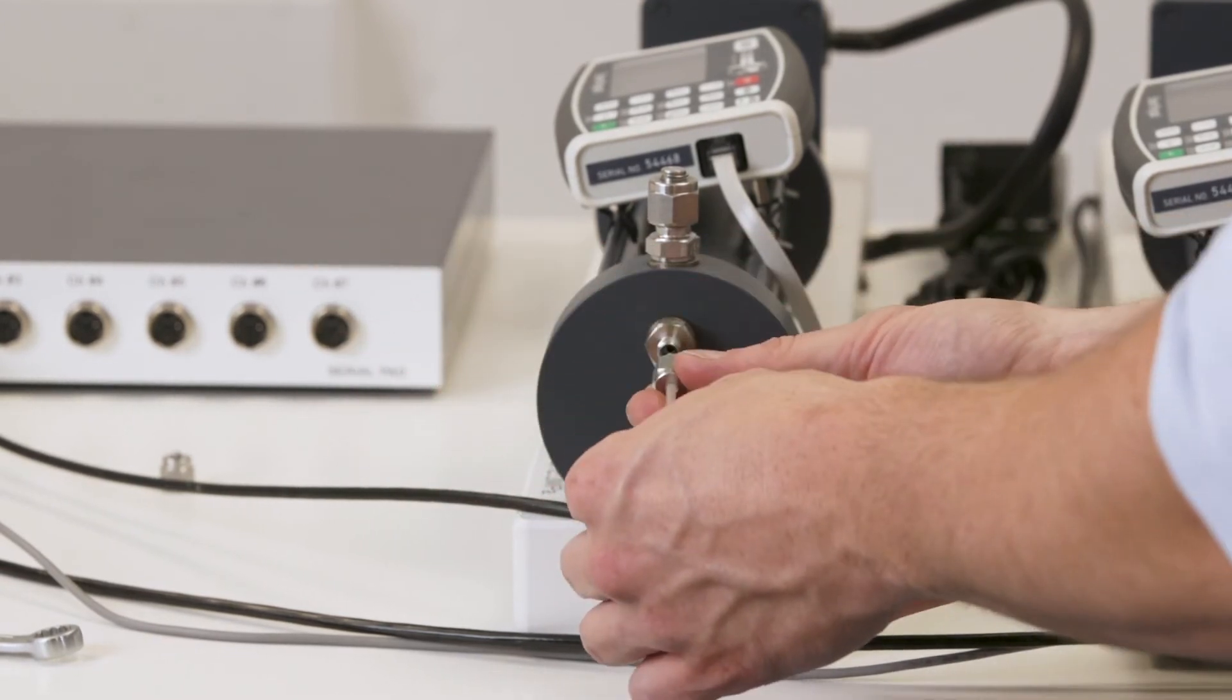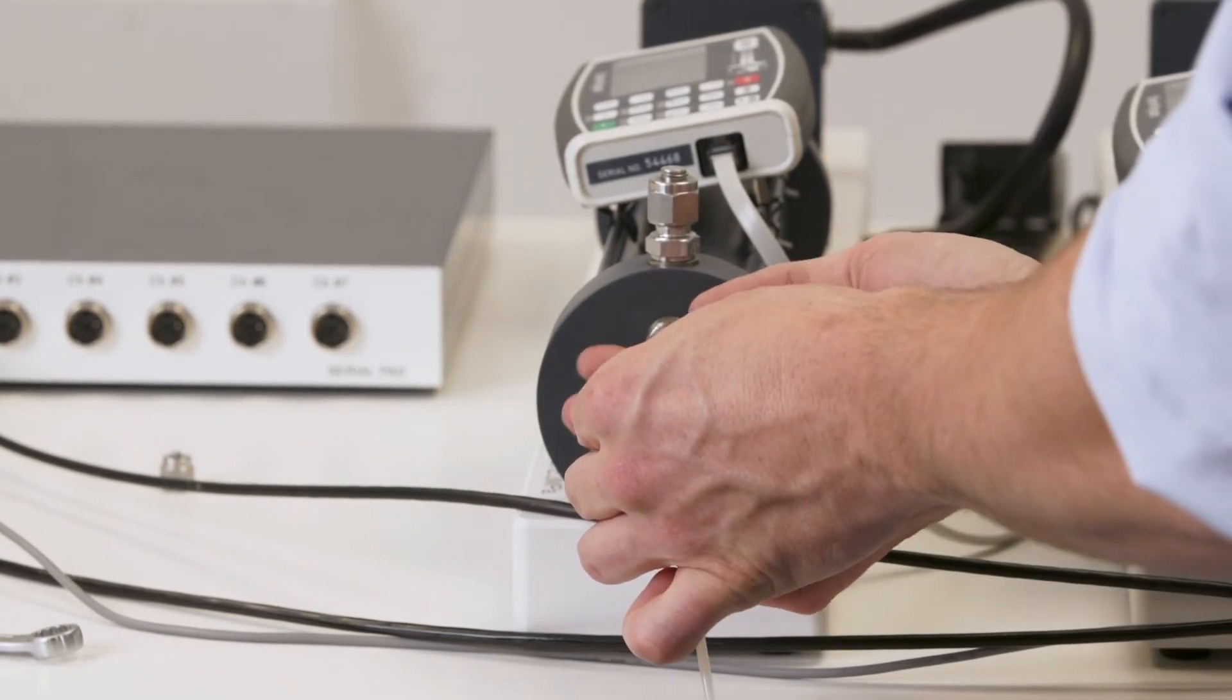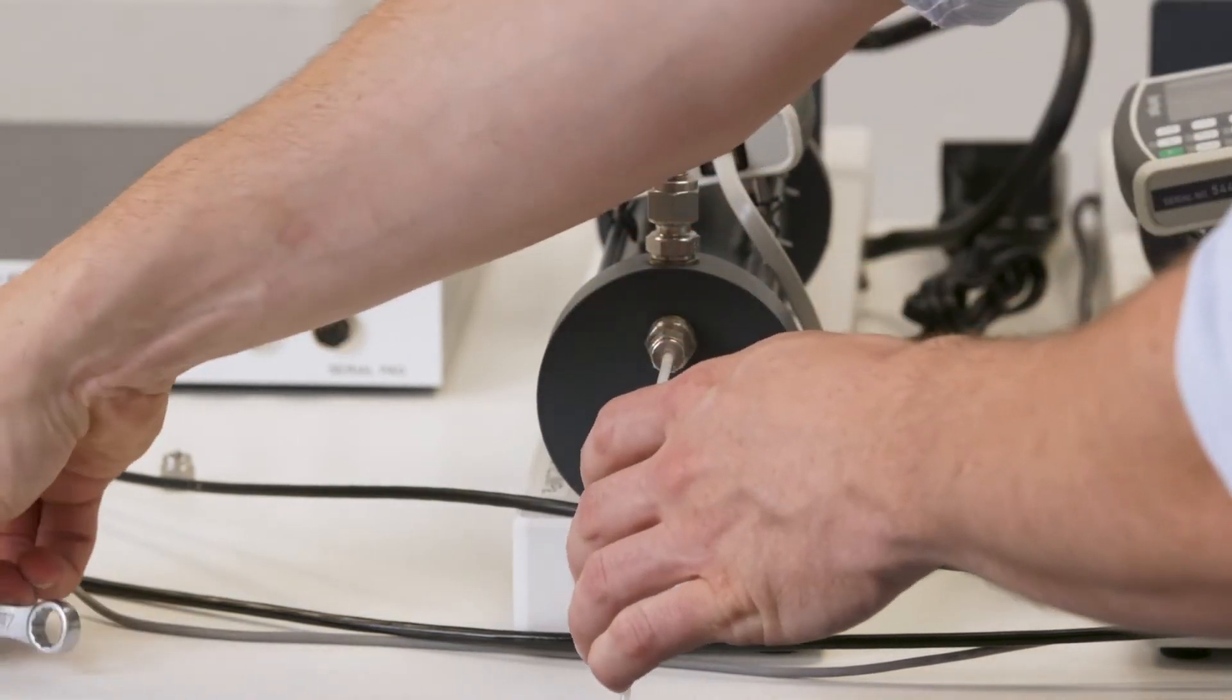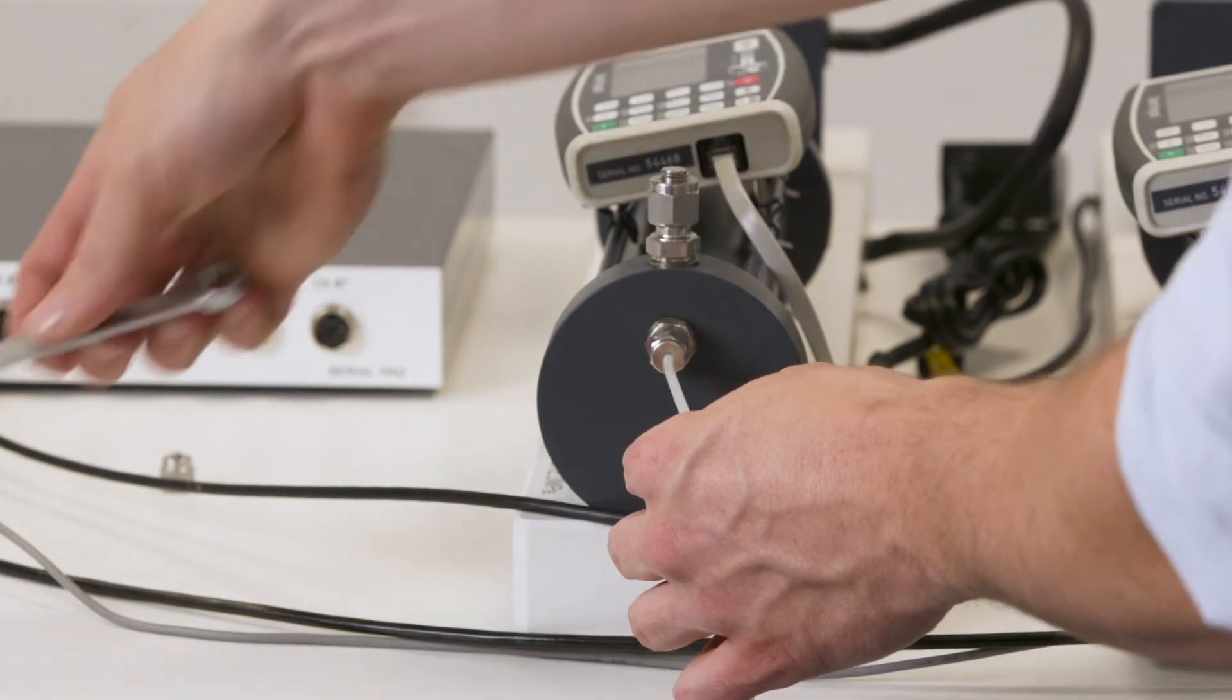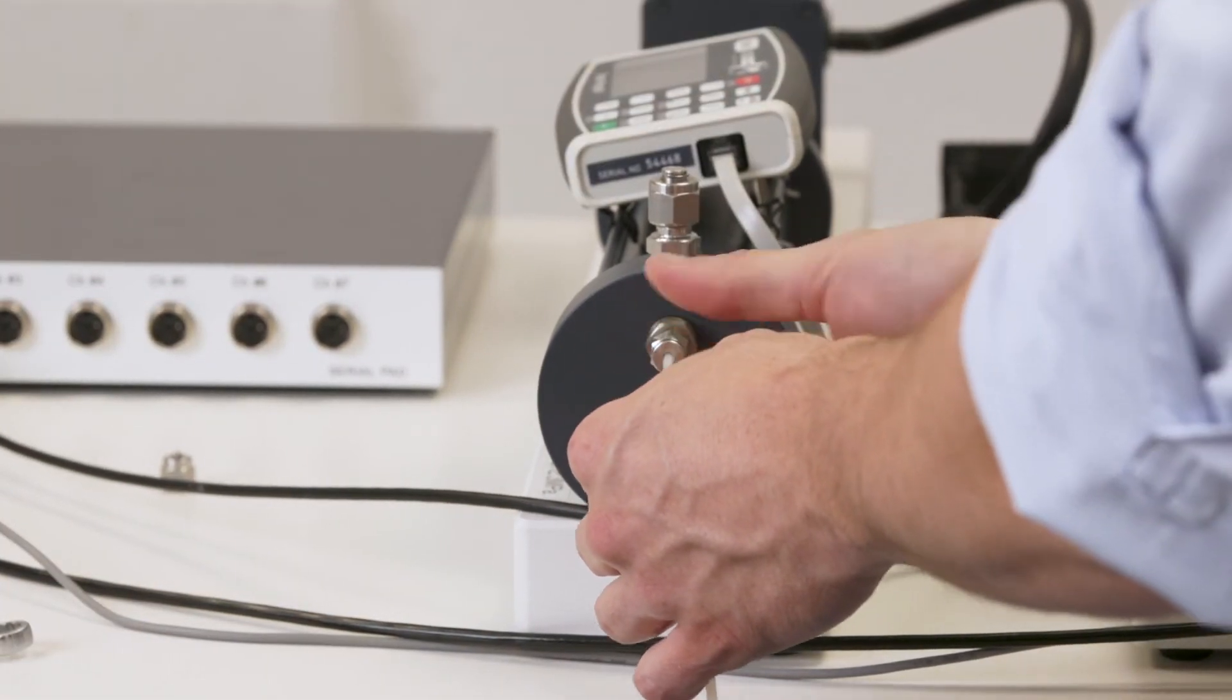Once we've made a connection, at any point you can remove it and refit it, but always finger tight and this time around just enough on the spanner to tighten it up so you can't undo it by hand.